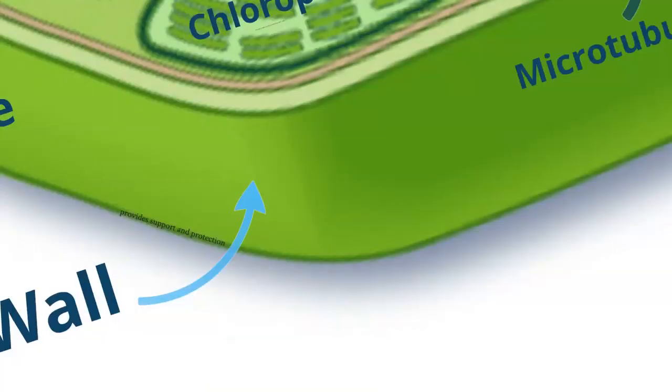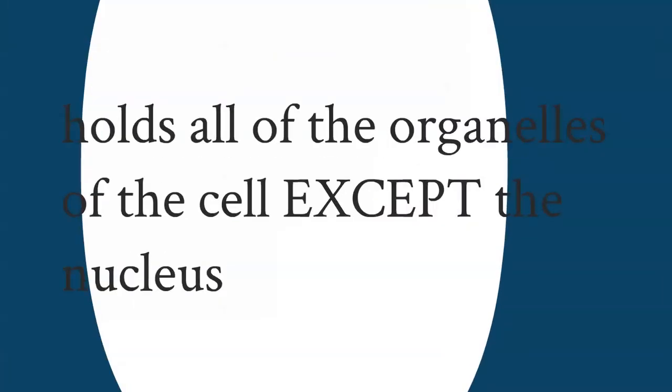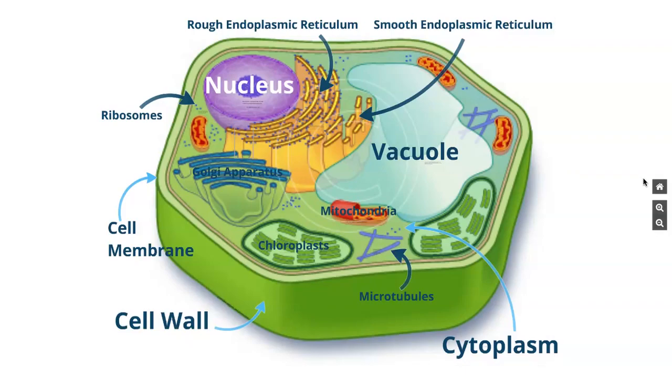Cell wall provides support and protection for the cell. Again, you're not going to find it in an animal cell. And then the cytoplasm holds all the organelles of the cell except the part one. Sweet.